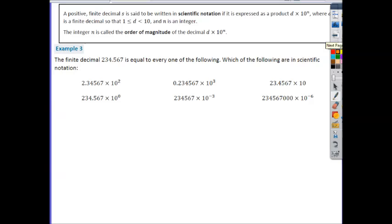Scientific notation is defined as a positive finite decimal s is said to be written in scientific notation if it is expressed as a product d times 10 to the nth power, where d is a finite decimal so that 1 is less than or equal to d, which is less than 10, and n is an integer. The integer n is called the order of magnitude of the decimal d times 10 to the nth power. Now, notice this is our basic format. But what's really important about this is how they define what d can and cannot be. What they're saying here is that d has to basically have one digit before the decimal place. If there's anything more or anything less, that is not true scientific notation. So it's saying basically your number has to fall between 1 and 10, and it can be 1. But it cannot be 10 because 10 would have two digits before the decimal.